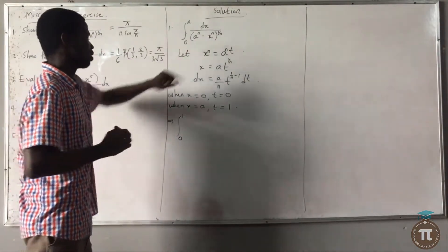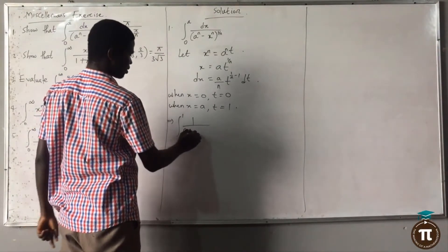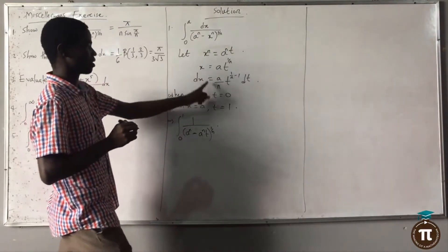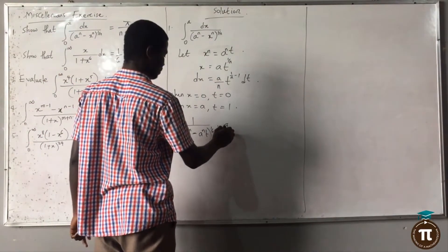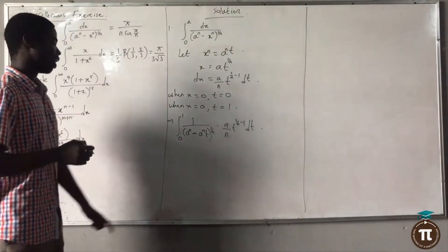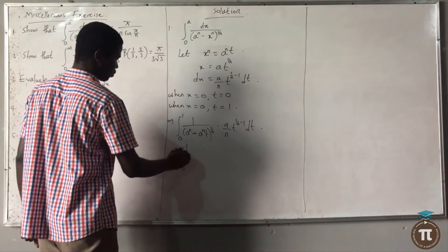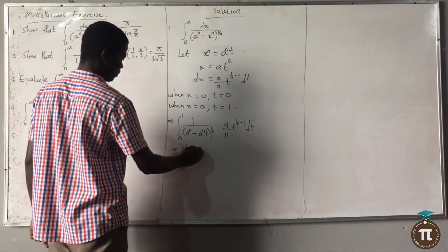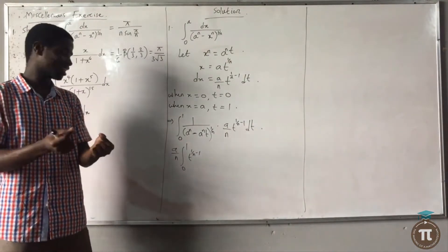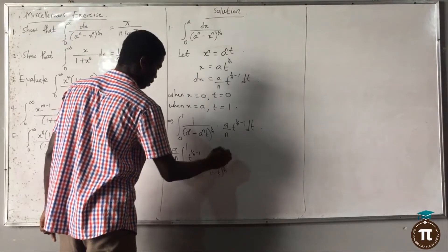Using all the substitutions made, I write 1 over (a^n minus s^n), where s^n equals a^n·t, everything raised to the power of 1/n, multiplied by ds. Since ds equals a/n · t^(1/n - 1) dt, and a/n is a constant, we can bring it out of the integral. I have a/n integral from 0 to 1, giving a^(1/n) from the first bracket, and factoring out a^n from the second bracket yields just a.